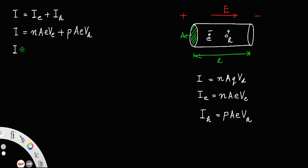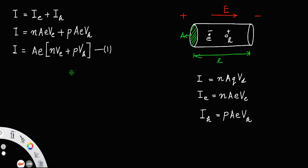Taking A and e outside as common factors, the total current I equals A times e times the quantity N·V_E plus P·V_H. Let us call this equation number 1.